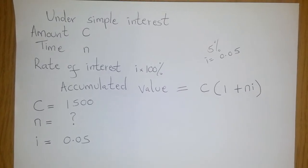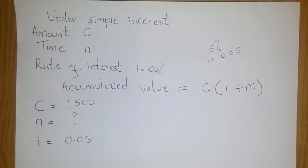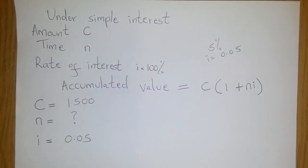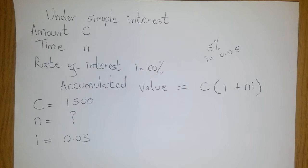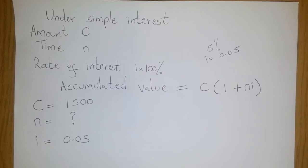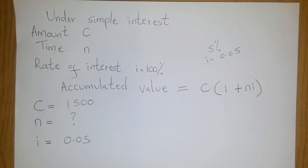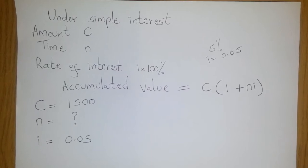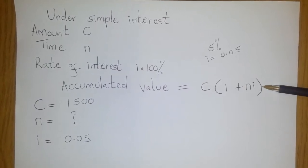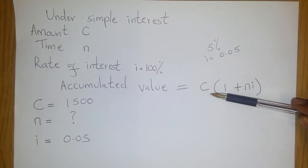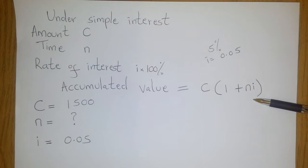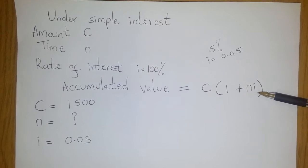Now we know that under the simple interest model, when given an amount C and the rate of interest i times 100% over a period n, the accumulated value is calculated by using this formula here. You have C multiplied by what's in brackets here: 1 plus n times i.